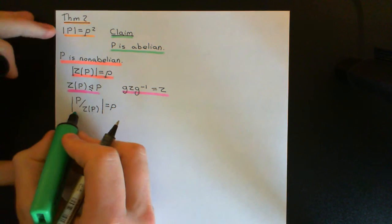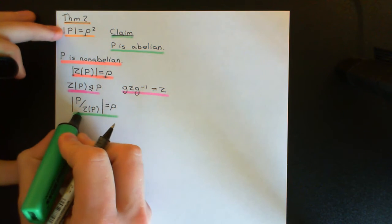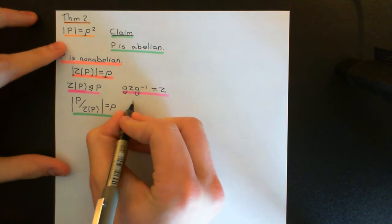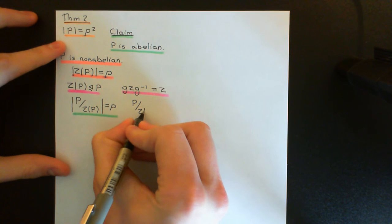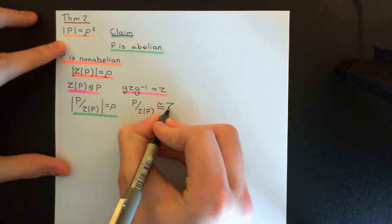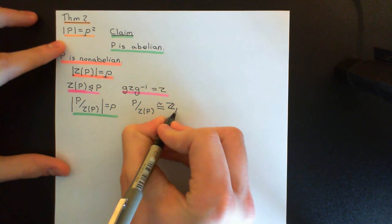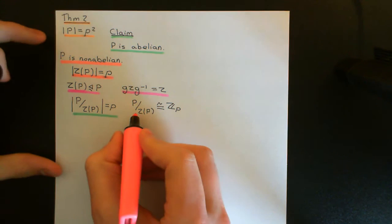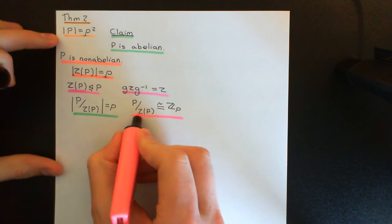Since the quotient group has prime order P, we can instantly conclude it is isomorphic to the cyclic group on P elements. So P quotiented by its centre is isomorphic to Z_P, and this is going to be the key to showing that the group P is in fact abelian.